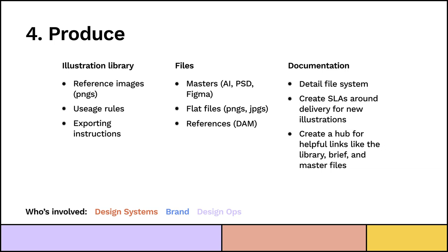These are just the files you're probably going to need: masters in some editable form, flat files — either PNGs or JPEGs because nobody wants a Slack message saying 'can you please send me that AI as a PNG.' And then references in your DAM, which might be the same as your flat files. Documentation: detail your file system so that when you leave the company to go on to your next amazing adventure, someone else knows how you built it. You can create SLAs around delivery for new illustrations — when someone asks 'how long does it take to make an illustration,' if you don't have an agreement, they don't have any way to know. I can make an icon in 20 minutes, but I may not have 20 minutes right now. If you create an SLA, it's much easier to say you can get an icon in a week or a hero in a month, and when you deliver early they're super happy. Create a hub for helpful links so people know where all these things live.